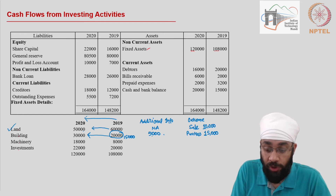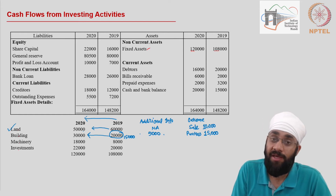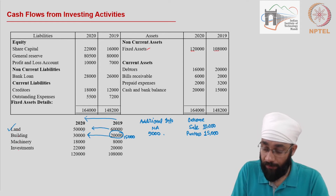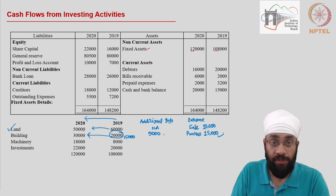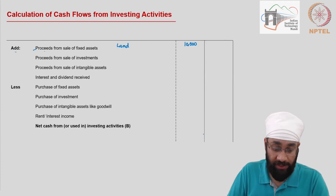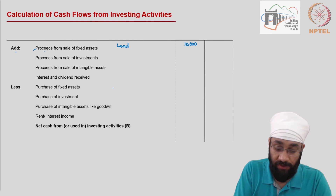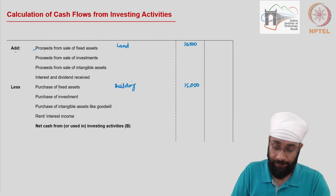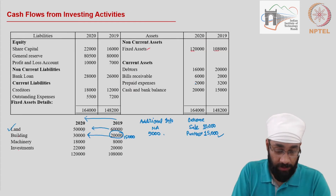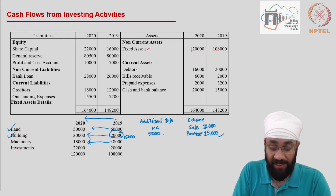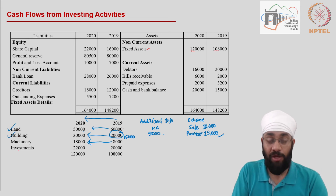The purchase is not only ten thousand but fifteen thousand, because the balance is going up by ten thousand but there is also a reduction of five thousand in the book value of the building. Therefore we are going to treat this as the purchase of building: fifteen thousand, shown in the outflows. Then we have machinery — machinery was eight thousand and now it is eighteen thousand, again a ten thousand increase.